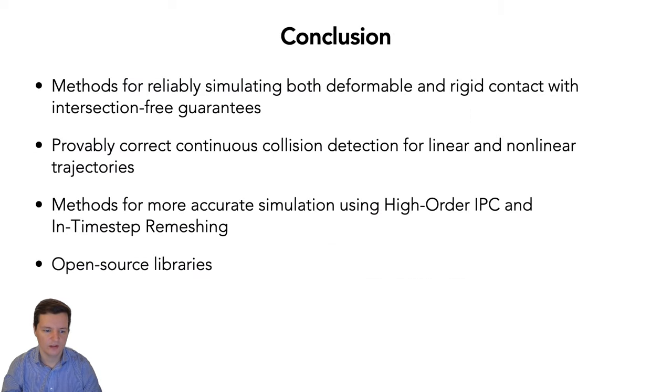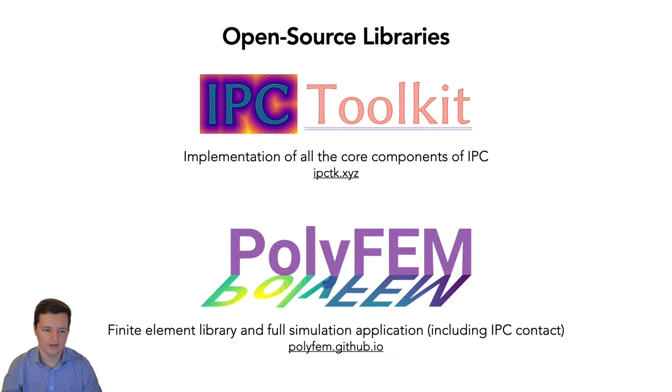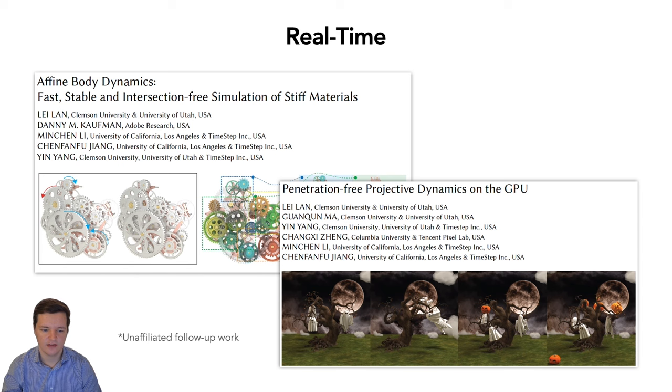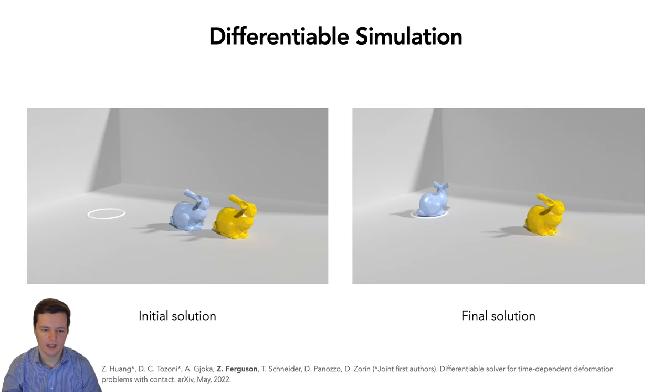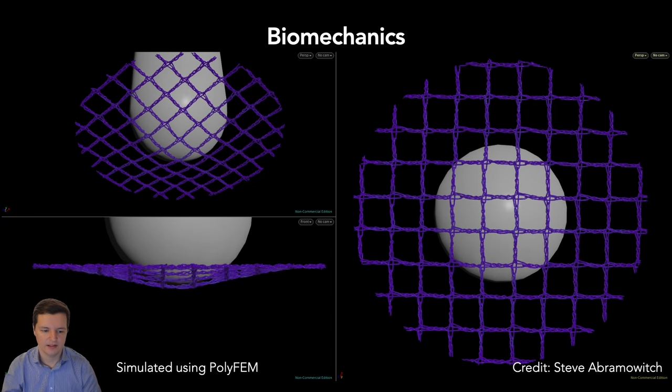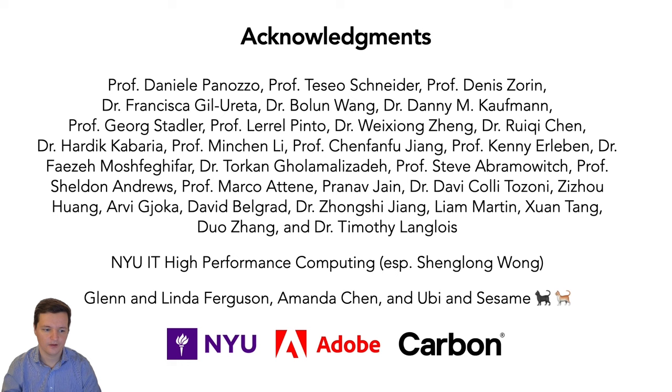In conclusion, we introduced methods for reliably simulating deformable and rigid contacts with intersection-free guarantees, provably correct continuous collision detection for linear and non-linear trajectories, and methods for accurate simulation using high-order IPC and n-timestep remeshing. We also released all of this work as open source libraries, including the IPC toolkit which implements all the core components of IPC and a full simulator named Polyfem. Our work has sparked a revolution in physical simulation with numerous follow-up works, such as providing intersection-free guarantees for real-time simulations, differentiable simulation capable of handling complex contact, improved methods for simulating robotic tasks, and physically accurate simulation of biomechanical settings. With that, I say thank you to all my collaborators and family, and thank you for watching.